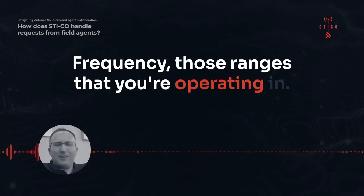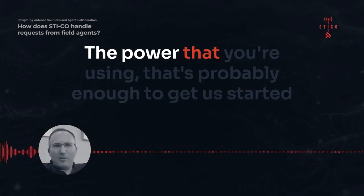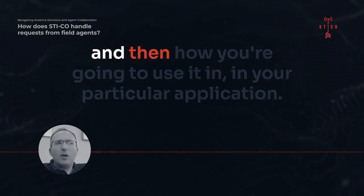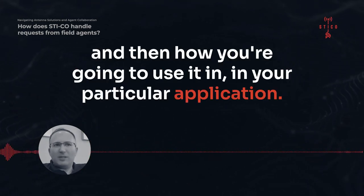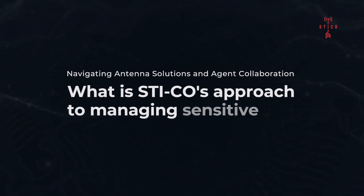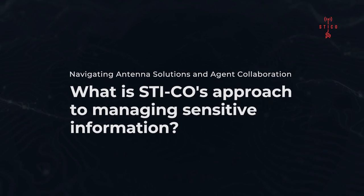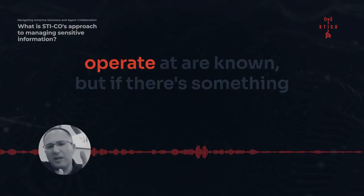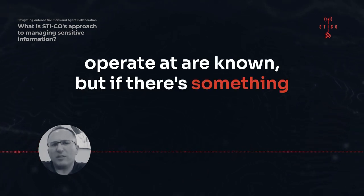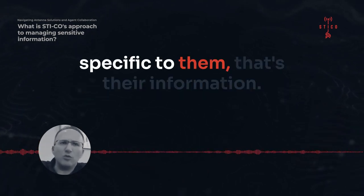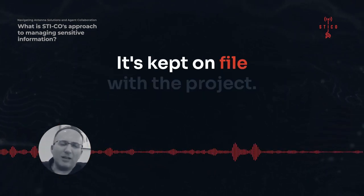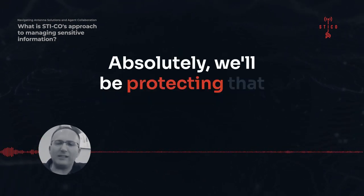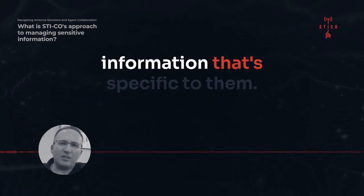Frequency, the ranges that you're operating in, the power that you're using — that's probably enough to get us started, and then how you're going to use it in your particular application. A lot of the frequencies that most field agents probably operate at are known, but if there's something specific to them, that's their information. It's kept on file with the project and it's not something that's discussed openly. We'll be protecting that information that's specific to them.